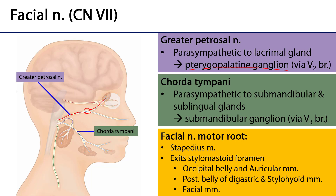Also within that canal is going to originate the chorda tympani. The chorda tympani is going to travel through the middle ear, exit the skull, and enter the infratemporal fossa, where it hitchhikes along branches of V3 called the lingual nerve. Just off of the lingual nerve is the submandibular ganglion, which serves the sublingual salivary gland and the submandibular salivary gland. So those pre-ganglionic parasympathetic fibers of chorda tympani are serving those salivary glands.